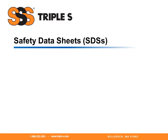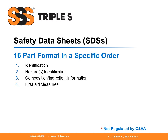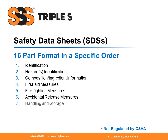Let's take a look at the 16 parts that are in specific order on the Safety Data Sheet. One is identification. Part two is the hazard identification. Part three would be composition or ingredient information for the product. Part four would be first aid measures. Part five, firefighting measures. Part six, accidental release measures. Part seven, handling and storage.